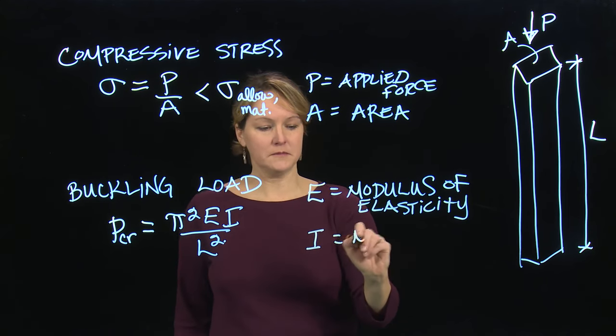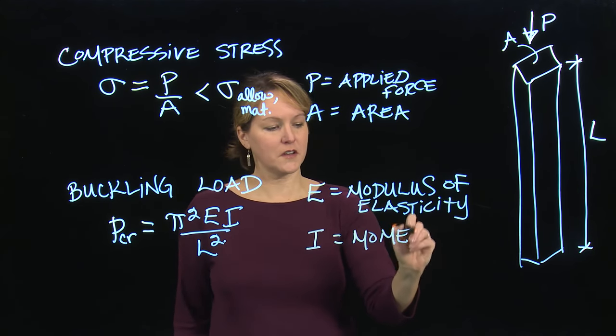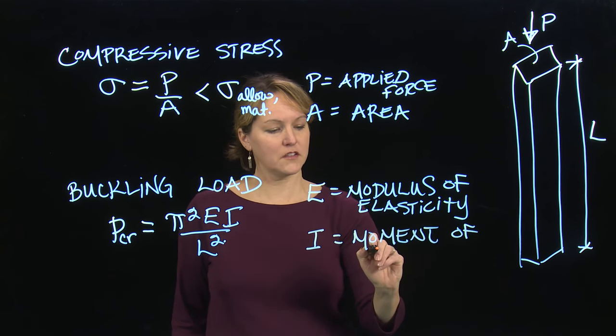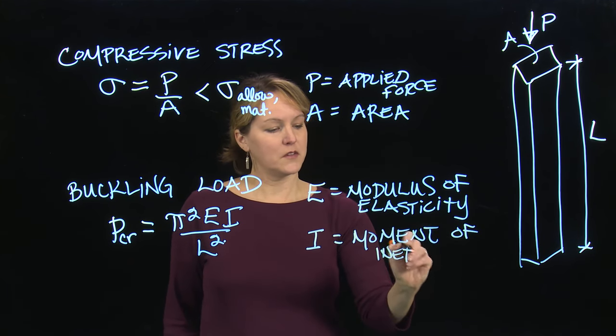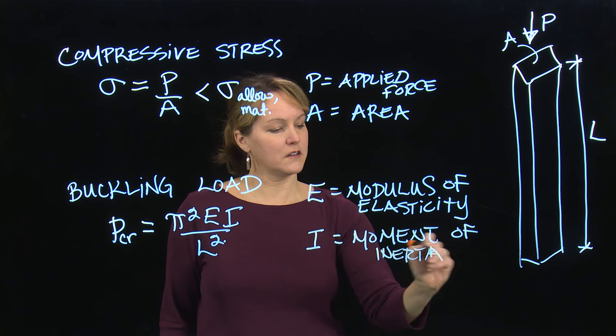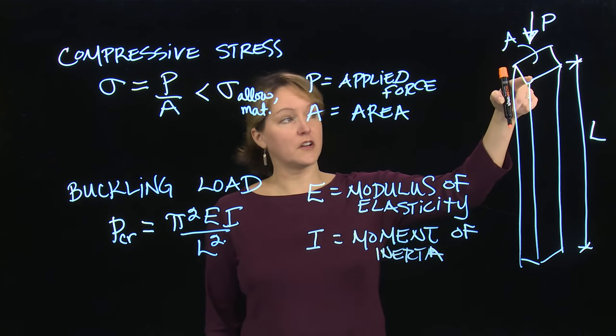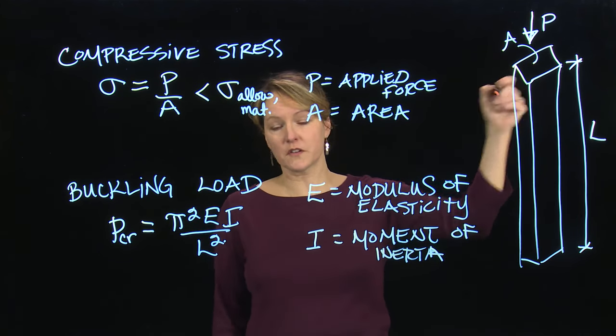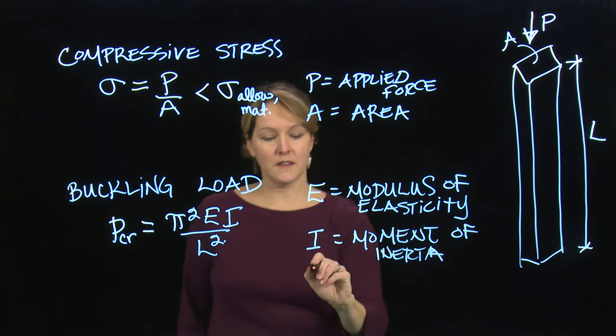We have moment of inertia. Moment of inertia is a function not of the material, but of the cross-section, so the shape. So this rectangular cross-section will have a certain moment of inertia. And that'll be different than if it were circular or hollow tube. And then L is just the length.